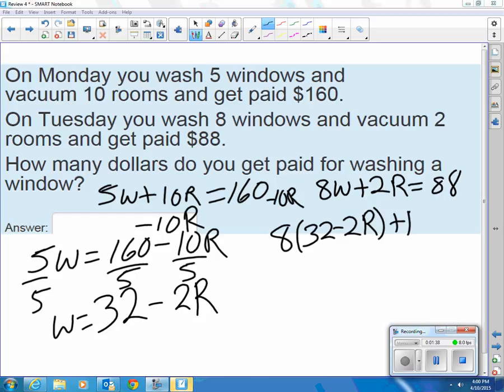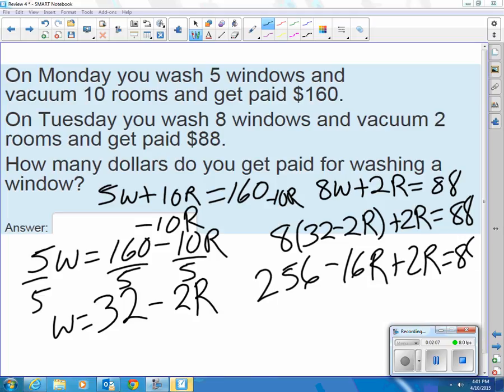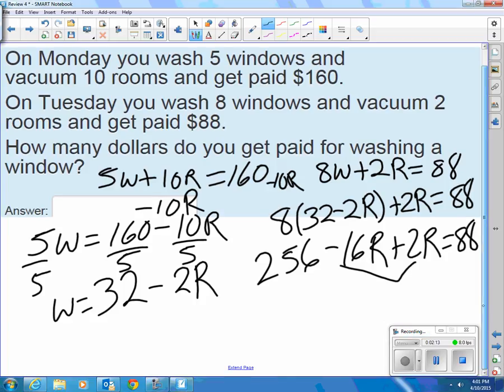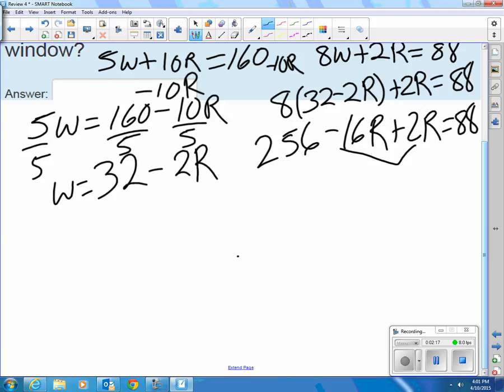8 times 32, 8 times 3 is 24, so 8 times 30 is 240, plus 16. So that would be 256 minus 16R plus 2R equals 88. And I combine my two variable terms.